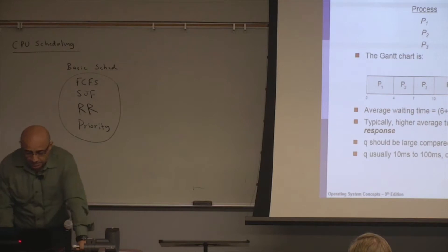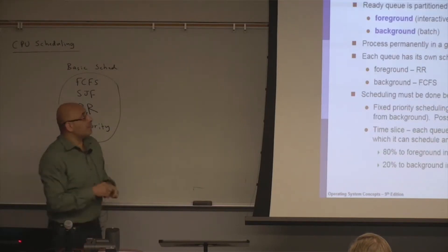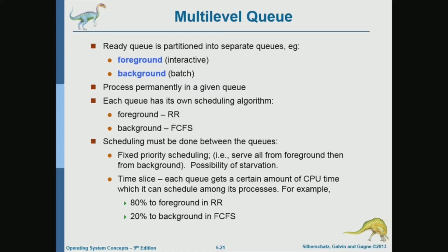How does it do that? In a real operating system, there are multiple levels. The multi-level queue idea is something implemented in real operating systems, where the system has multiple levels of priority. For example, the higher level of priority may have foreground or interactive processes, while the lower level may have background or batch processes.